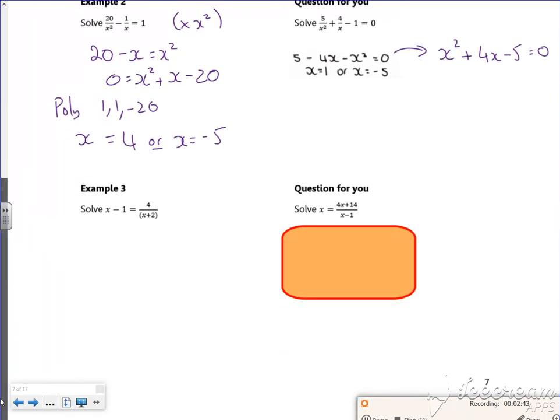So I'm going to multiply through by x plus 2. So I've got x minus 1, x plus 2 is equal to 4. So if I expand it, I've got an x squared. I've got a plus 2x minus an x is a plus x. Then I've got minus 2 is 4. So x squared plus x minus 6 is 0. It's got to give us x is 2 or x is minus 3.